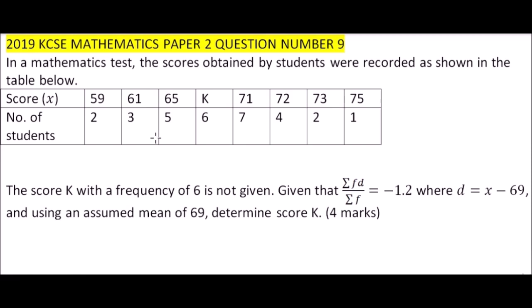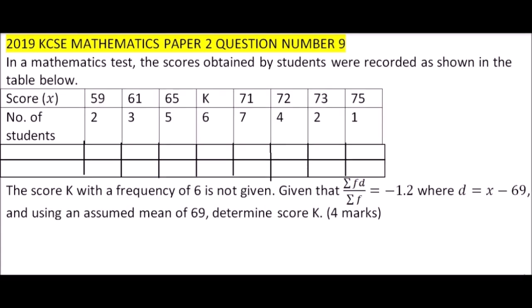We need to add two columns so that we are able to take care of the summation of the column for d and the summation of fd. So let's add those two columns and see how we work it out. These are the columns I've added, and this is the column of d equals